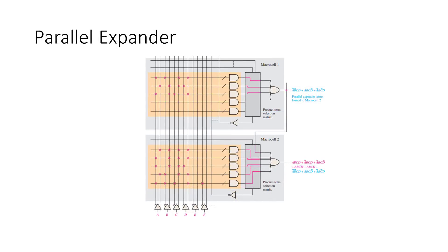Parallel expanders allow borrowing of unused product terms from other macro cells to expand a SOP expression. As we can see in this example, the entire SOP expression from macro cell 1 is fed into the product selection matrix of macro cell 2, allowing macro cell 2's output to include the product terms from both cells. The use of expanders is incredibly important within both CPLDs and FPGAs, as without them we would be incredibly limited by the number of variables and products allowed in our designs.